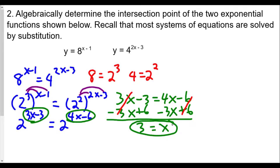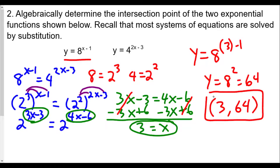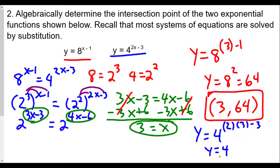Now we plug x equals 3 into one of the equations to solve for y. Using the first one: y equals 8 raised to (3 minus 1), and 3 minus 1 is 2, so y equals 8 squared, which is 64. The intersection point is (3, 64). We can verify using the second equation: y equals 4 to the (2 times 3 minus 3) equals 4 to the 3rd power, which is also 64. So the intersection point for this system of equations is (3, 64).